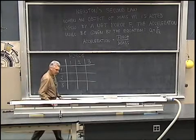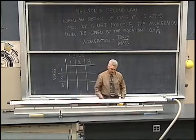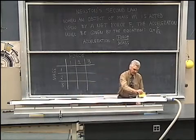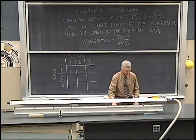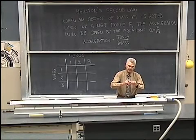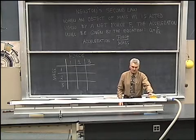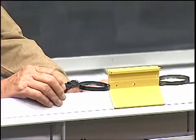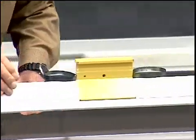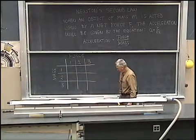Now to demonstrate that, I have here an air track and a car, and I'm going to apply a force with a spring to the car. Let me first turn on the air. As the air comes out through these holes, it'll let this car slide on an essentially frictionless surface as the air supports the car. I'm going to apply a force of what I'm going to call arbitrarily one unit of force — that'll be a certain stretch of the spring. I'm going to call this mass one unit of mass, and I'm going to measure the acceleration.